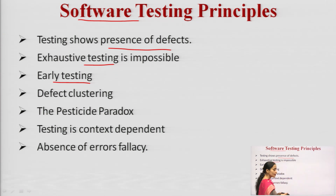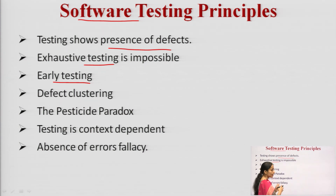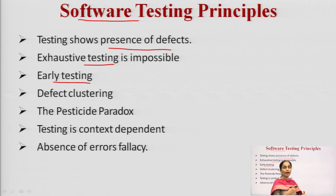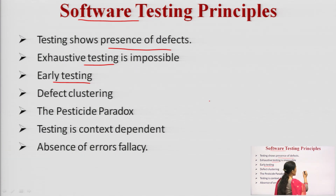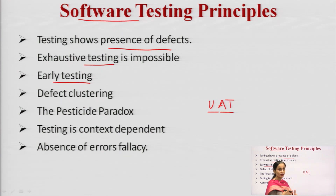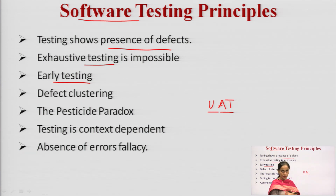There are several testing teams separately appointed in the software industry. Their job is to perform testing for unit testing, for entire components, for entire modules, so that the product gets accepted and UAT — user acceptance testing — succeeds. The earlier defects are found, the lower the cost of the software.